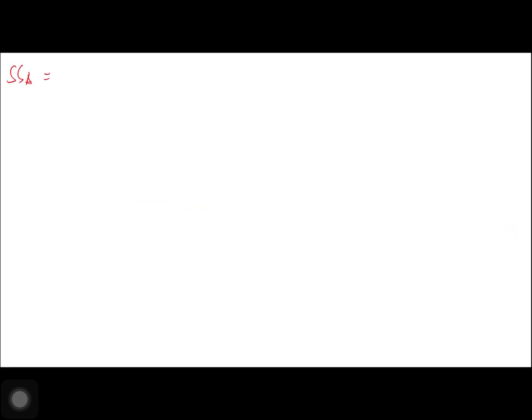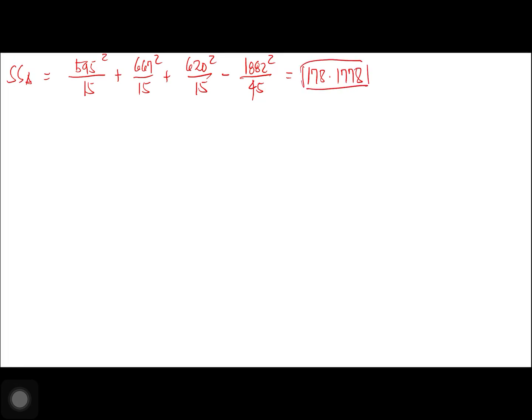Next we compute SSA, the sum of squares for the teacher factor. Please refer to your book MAT 9, pages 264 to 269 for the formulas. SSA equals the column totals squared over the number of values per column, minus the grand total squared over N: (595² / 15) + (667² / 15) + (620² / 15) − (1882² / 45). This gives SSA = 178.1778.